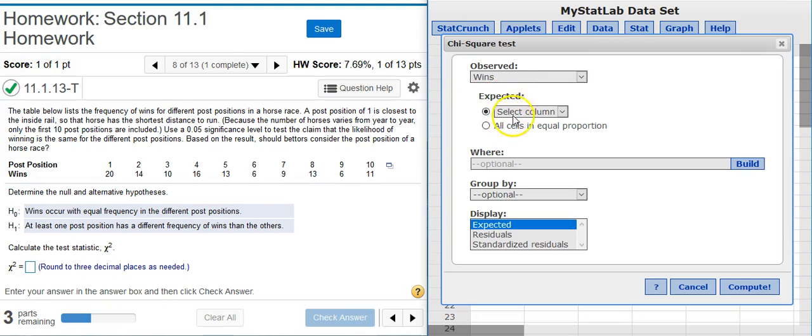Expected, I can either put in a column that has values from a given distribution or since that's not the case here, I'm going to select all cells in equal proportion. And I'm ready to hit compute.